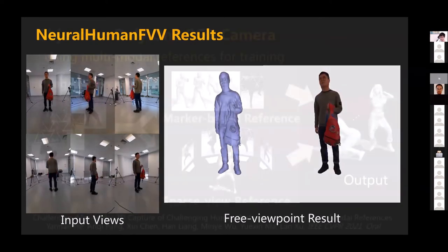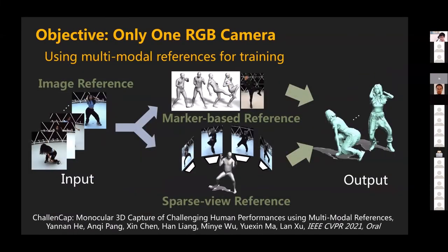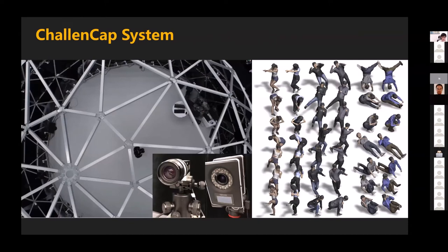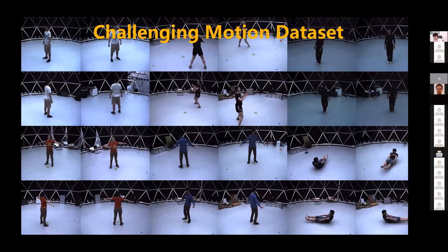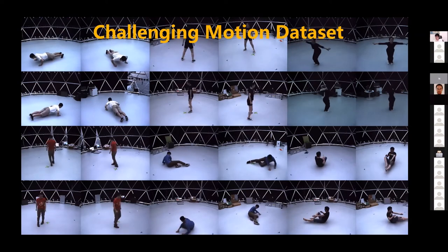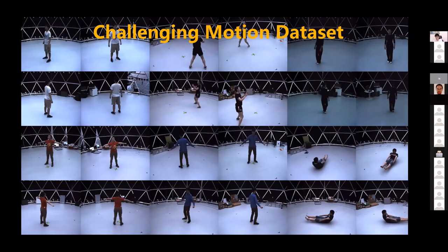We then ask: can we use just one RGB camera? This turns out to be very difficult. We figured the most challenging part is not the geometry but the pose. We built a multi-view capture system combining a mocap system and multi-view reconstruction, then used it to capture very complex movements including people doing athletic movements and yoga. We show challenging motion datasets including push-ups and other difficult movements.